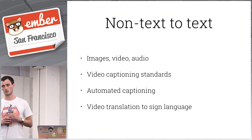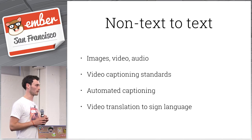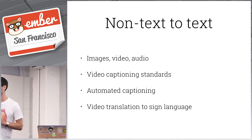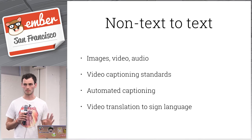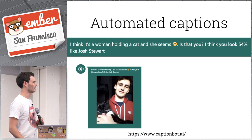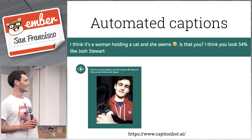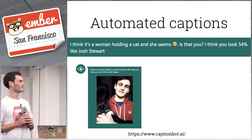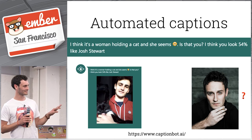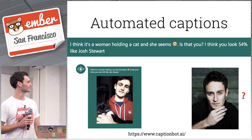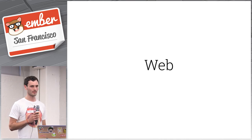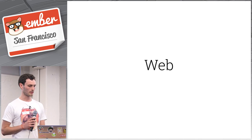If you've got multimedia — images, audio, video — they're typically inaccessible. Providing text representations is a really good way to go. You can do this through video captioning and by providing HTML attributes. We're seeing a lot of good AI auto-captioning. I tried Microsoft's tool — I gave it an image of me holding a cat and it said 'I think it's a woman holding a cat, she seems happy.' Facebook has also rolled out automatic captioning for video adverts.